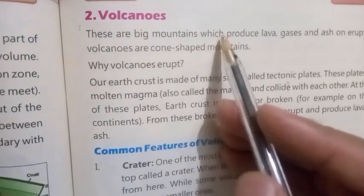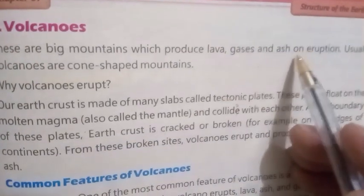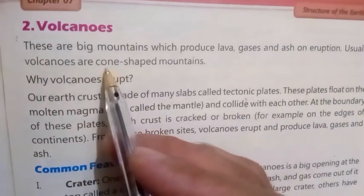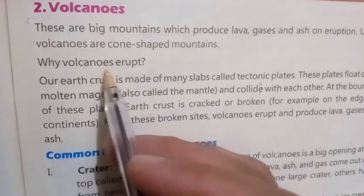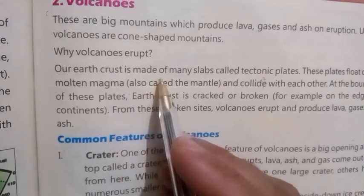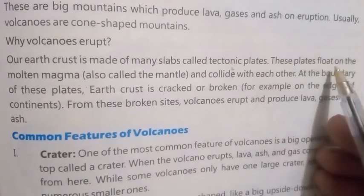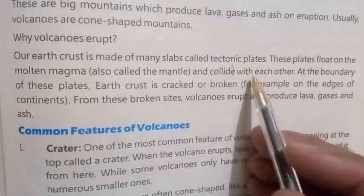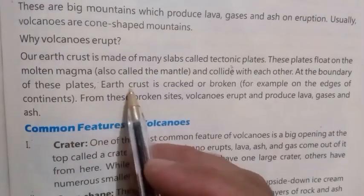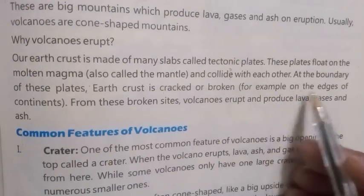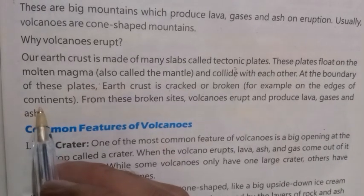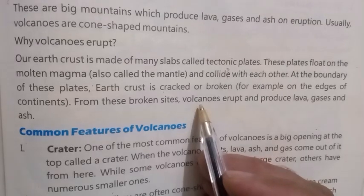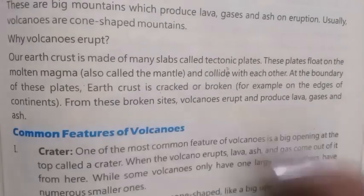Number 2: Volcanoes. These are big mountains which produce lava, gases, and ash on eruption. Usually volcanoes are cone-shaped mountains. Why do volcanoes erupt? The earth's crust is made of many slabs called tectonic plates. These plates float on the molten magma, also called the mantle, and collide with each other. At the boundary of these plates the earth's crust is cracked or broken. From these broken sides, volcanoes erupt and produce lava, gases, and ash.